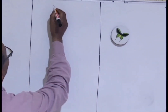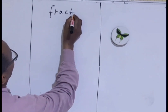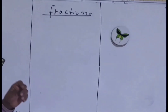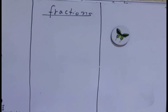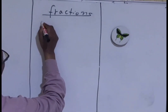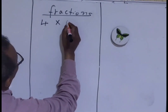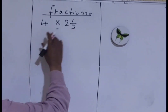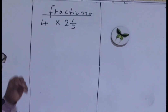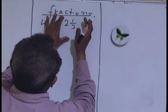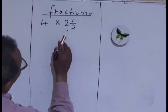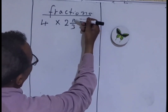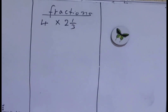Let's do fractions. Let's start doing multiply whole number by mixed fraction — whole number times 2 and 1 over 3. So this whole number and this mixed fraction: a mixed fraction consists of a whole number and a proper fraction. 2 is the whole number and 1 over 3 is the proper fraction because the numerator is less than the denominator.